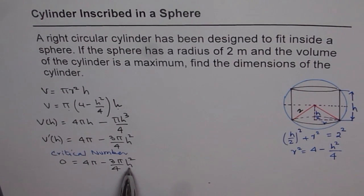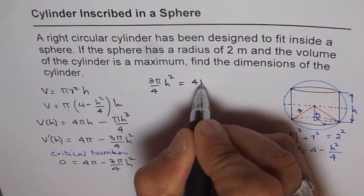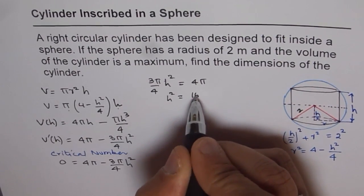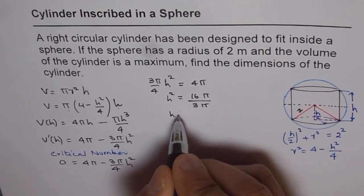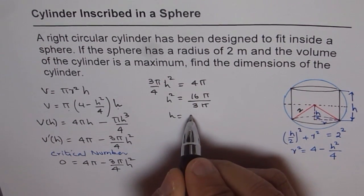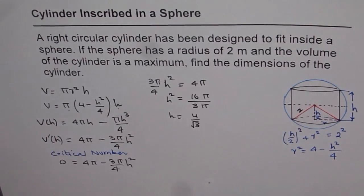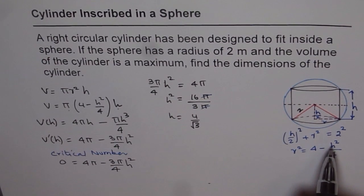Now let us find the value of h. We have (3π/4)h² = 4π. Isolating h: h² = 16π ÷ 3π = 16/3, and h = 4/√3. Pi and pi cancel out when we take the square root. For this particular height, radius will be found by substituting this height back.